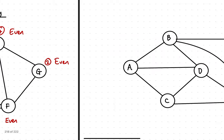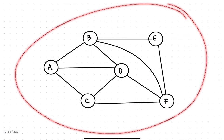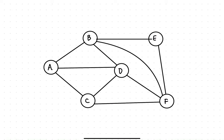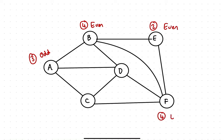Let's have a look at another diagram. We'll start by looking at whether the nodes are odd or even. At A, we have three edges — that is an odd degree. At B, there are four edges — even. At E, we've got two — even. At F, four — even. At C, three — odd. And at D, we have four — even.